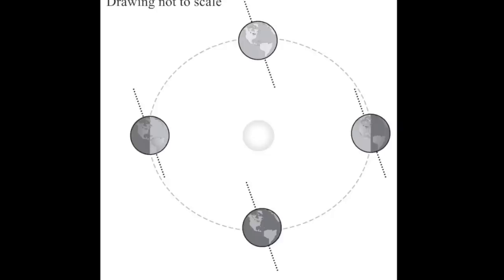The diagram here comes from the seasons lecture tutorial. The Earth's position in its orbit around the Sun is shown with the Northern Hemisphere pointed towards the Sun — this would be Northern Hemisphere summer. When this part of the Earth is tilted towards the Sun, it's going to get more direct sunlight. When it is tilted away six months later, it will get less direct sunlight. In a moment I'll show you what I mean by more direct and less direct.